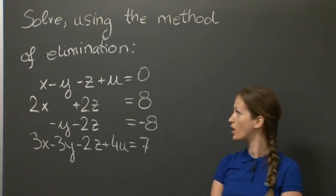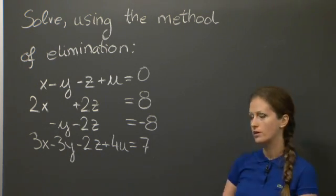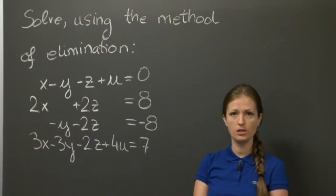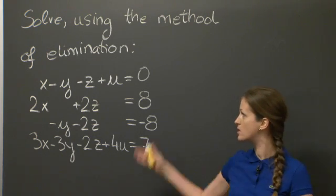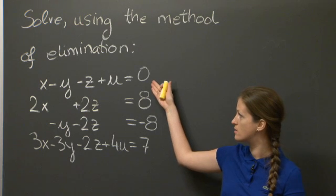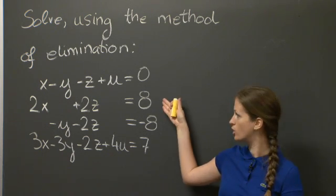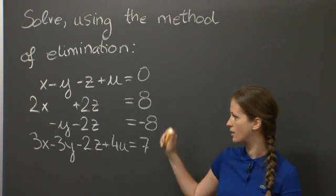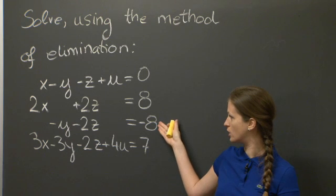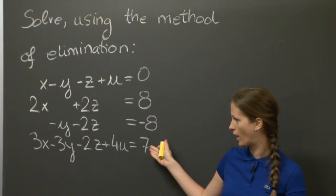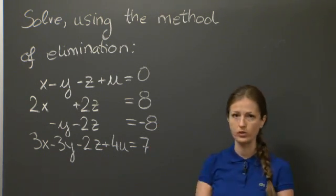Today's problem is straightforward: solve the following linear system with four equations and four unknowns using the method of elimination. The system is x - y - z + u = 0, 2x + 2z = 8, -y - 2z = -8, and 3x - 3y - 2z + 4u = 7.